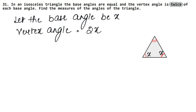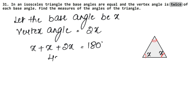Twice means two times. We know that the sum of angles of any triangle is 180 degrees. So the sum of three angles is 180 degrees. We will add both base angles and the vertex angle, so we get 4x equals 180.